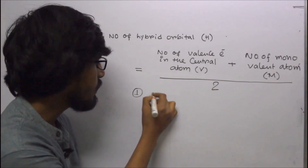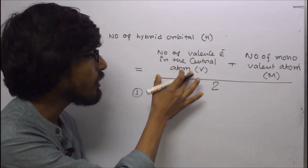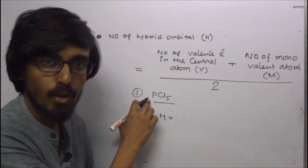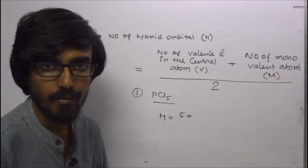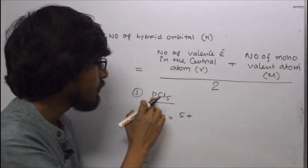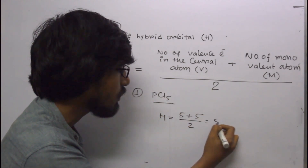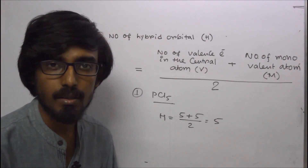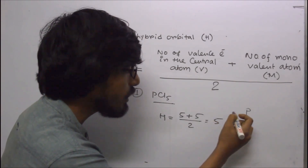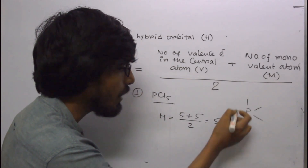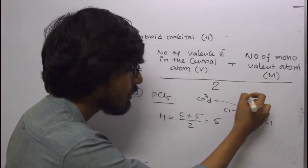For PCl5: number of hybrid orbitals = (valence electrons of phosphorus + number of monovalent atoms) ÷ 2 = (5 + 5) ÷ 2 = 5. Phosphorus has the electronic configuration 2, 8, 5, giving 5 valence electrons. Five chlorine atoms are monovalent. So the total hybrid orbitals = 5, hybridization is sp3d, and the shape of PCl5 is trigonal bipyramidal.